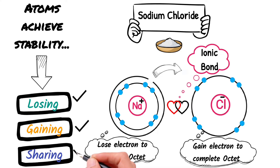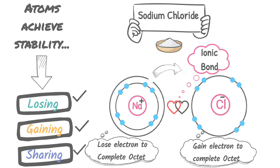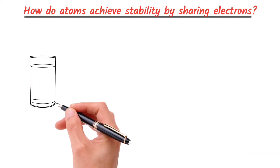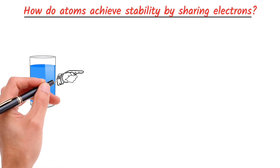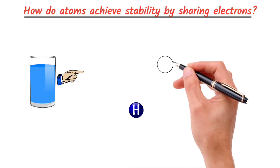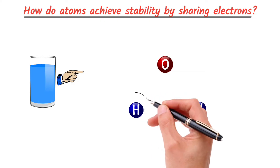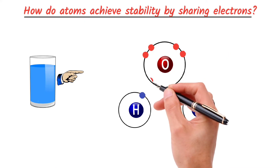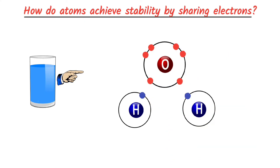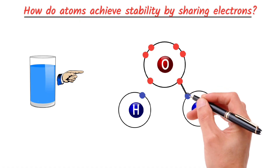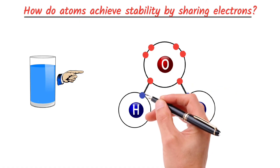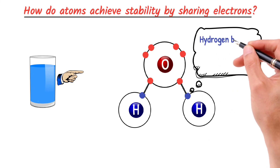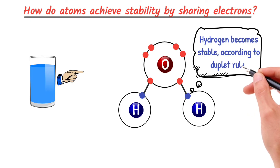Atoms also achieve stability by sharing electrons. Let's take water as an example. Water is made up of two hydrogen atoms and one oxygen atom. Hydrogen has only one electron in its outer shell, while oxygen has six electrons in its valence shell. In order to achieve stability, the hydrogen atoms share their electrons with the oxygen atom. This results in each hydrogen atom having two electrons in its outer shell, so hydrogen becomes stable according to the duplet rule.